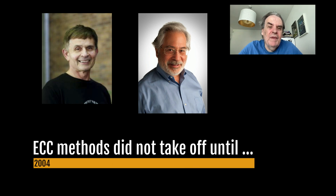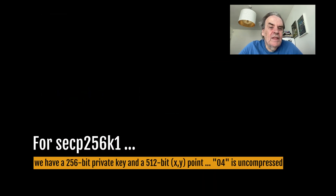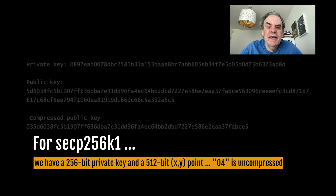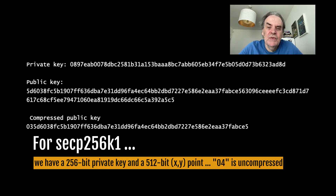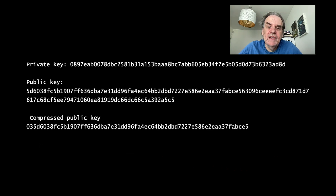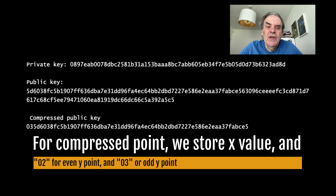Elliptic curve cryptography methods did not take off until 2004. In ECC the public key is a point on the elliptic curve. For secp256k1 we have a 256-bit private key and thus a 512-bit x,y point for the public key. A 04 at the start of the public key defines an uncompressed public key and thus an x,y point, whereas 02 or 03 are compressed versions of the points and only have the x coordinate and whether the y coordinate is odd or even.